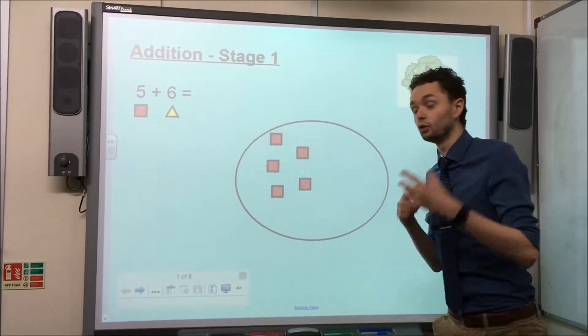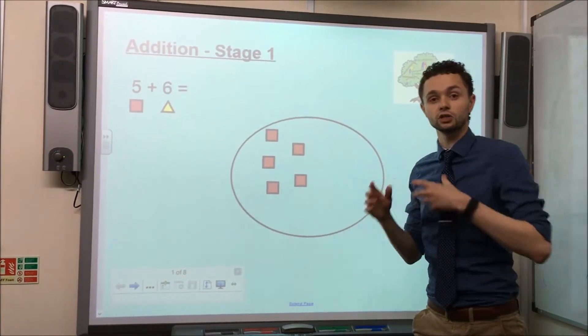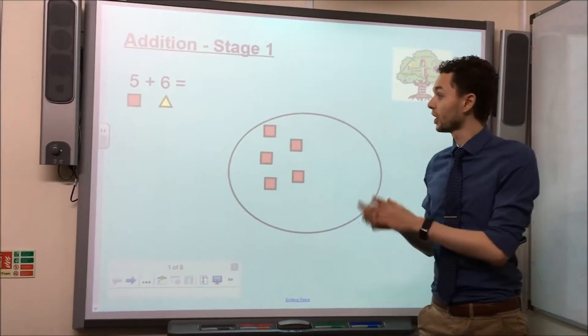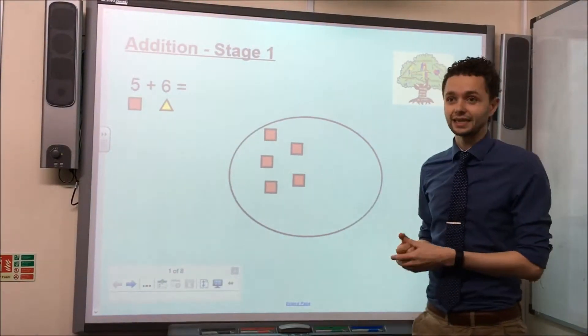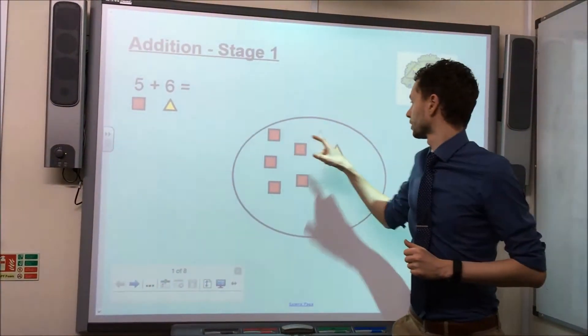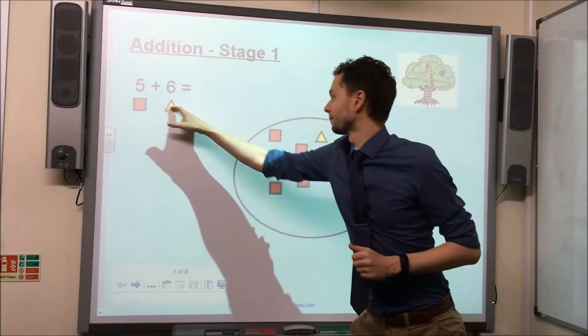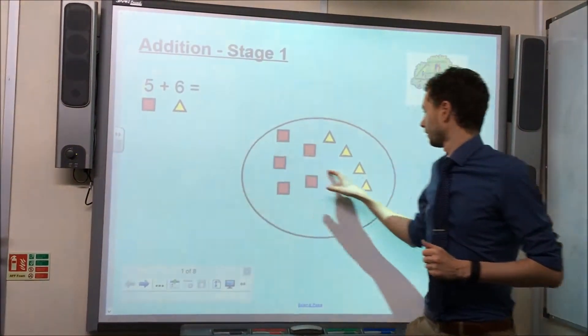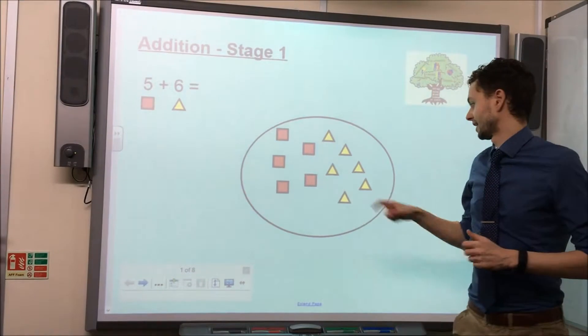Next I'm going to get another object, a different colour, a different size, and count out enough for the second number. I'm adding 6, so I'm going to count out 6 triangles. 1, 2, 3, 4, 5 and 6.